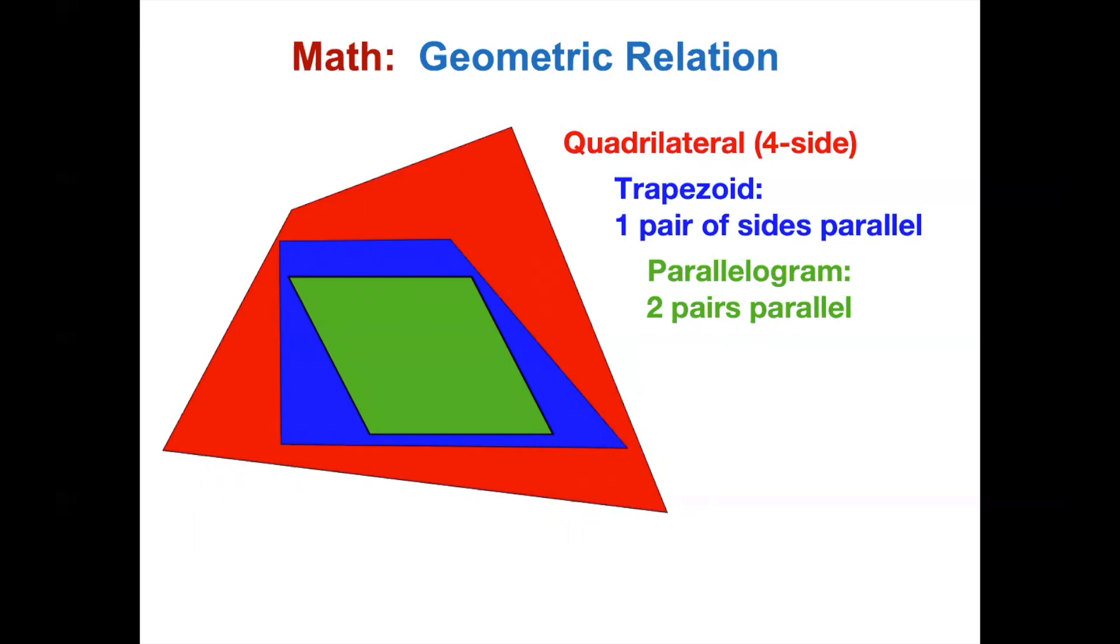A rectangle is a particular case of a parallelogram. All four corners are in right angles. A square is a particular case of a rectangle with one more restriction. All sides are equal.